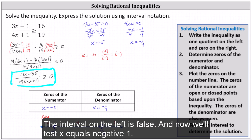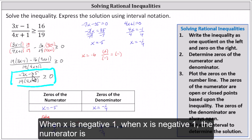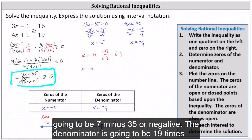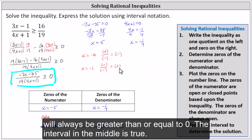Testing x = -1: the numerator is 7 minus 35, which is negative. The denominator is 19 times (-4 + 1) = 19 times -3, which is negative. A negative divided by a negative is positive. A positive value will always be greater than or equal to zero, so the interval in the middle is true.